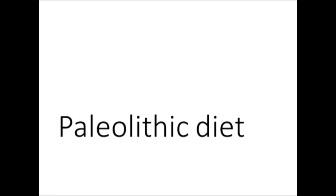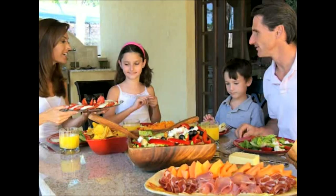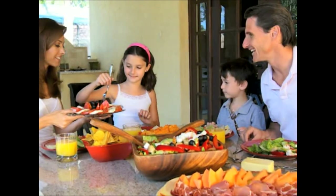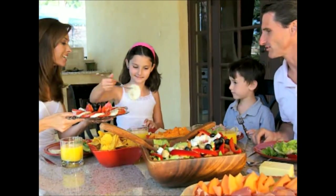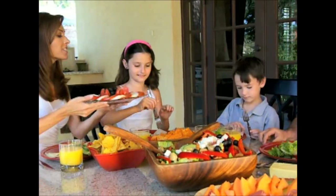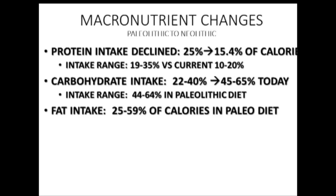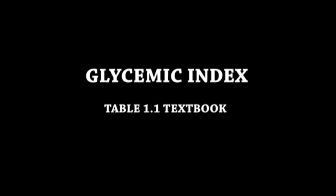Many archaeobotanists have argued that Paleolithic man ate mostly berries, plants, and some meats, and was essentially nomadic. The diet consisted of carbohydrates representing 22 to 40% of calories, protein 19 to 35%, and fats 25 to 59% of calories. Disagreement arises over whether the Paleolithic diet was low in carbohydrates — because of the mass of berries and plants consumed, carbohydrate intake was more likely 44 to 64% of calories. The glycemic index would have been low, and the level of exercise would have been very elevated.